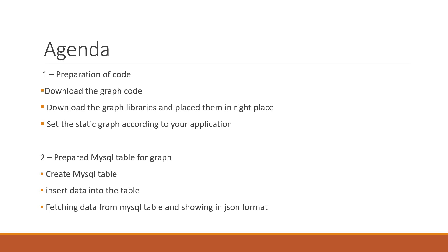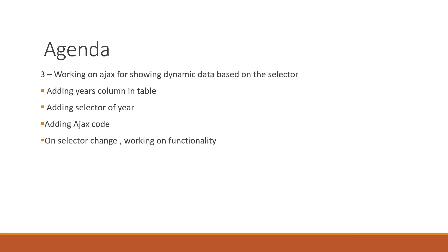In the second part we will create a MySQL table, insert the world population data, write the database script to fetch data from the database, convert that data to JSON format as input for the graph, and display the current year (2019) data in the graph.